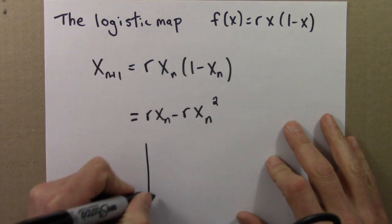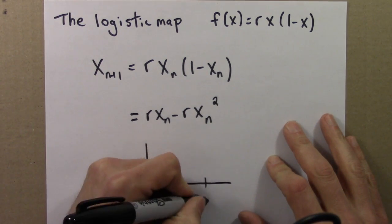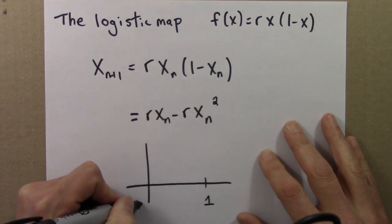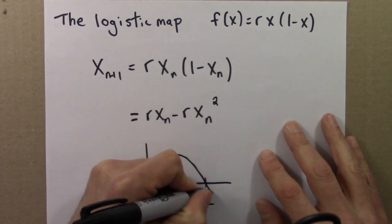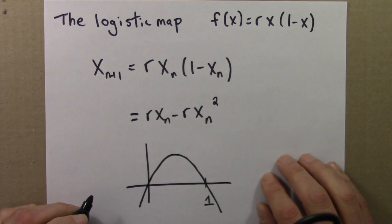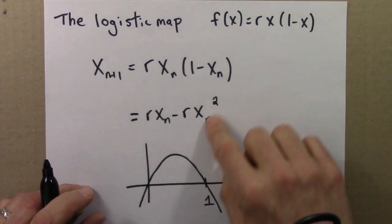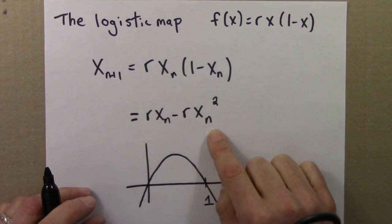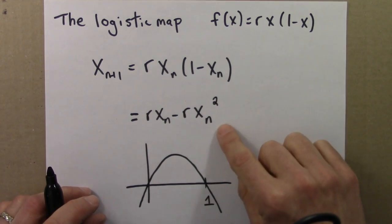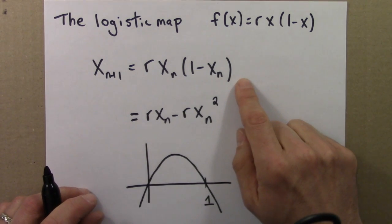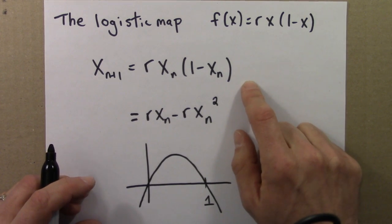And we can make a simple plot as well. It's just a downward opening parabola. So about as simple a function as one could imagine. And as we've seen though, when you iterate it, we can get aperiodic behavior, chaos, periodic behavior, and so on.